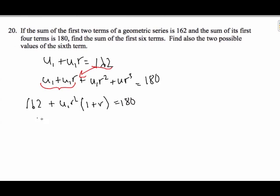And so, I know also that U1R squared, 1 plus R equals, subtract the 162, I get 18. Still two variables. Let's go back over to this equation, and we'll rewrite this scenario. If I factor out U1, I know U1, 1 plus R equals 162.